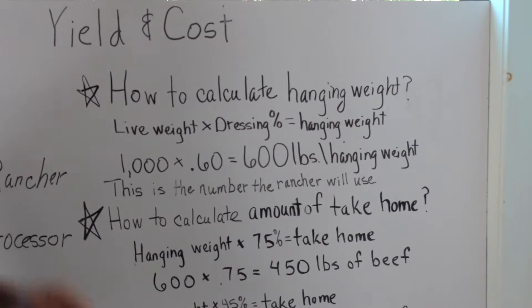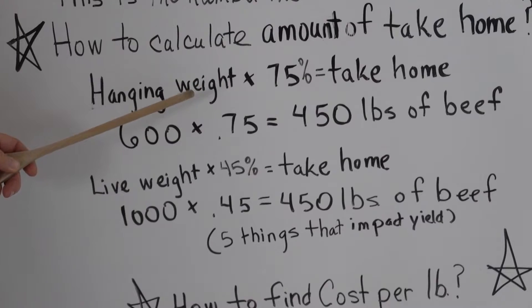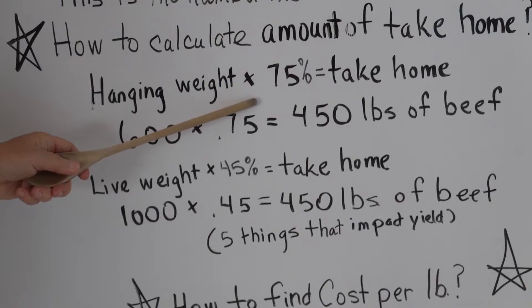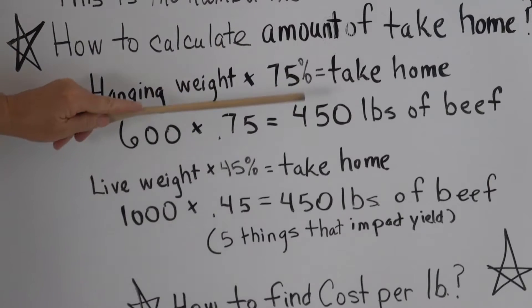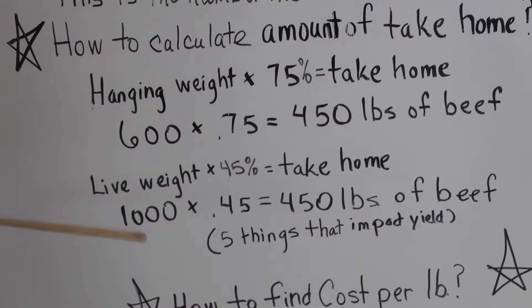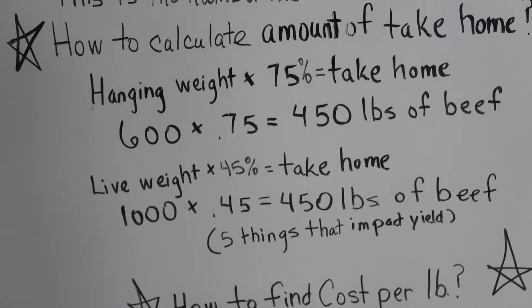Now I'm going to show you how to calculate the amount of beef you're going to take home. You take your hanging weight — which in our case is 600 pounds — and multiply it times 75%, and that will usually give you the amount of beef that you'll take home. There is variation in this number, as it can go up or down. So 600 times 0.75 gives you 450 pounds of beef — that should be a close estimate of what you will be taking home.